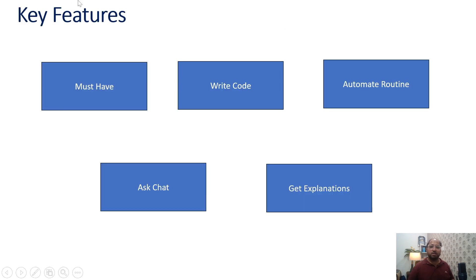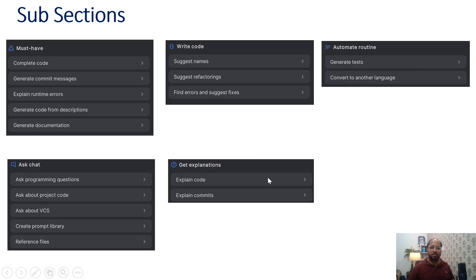So these are some of the key features — the sections you can see in the AI Assistant panel. The must-have options are: write code section, automate routine, ask chat and get explanations. Let us discuss these features one by one.